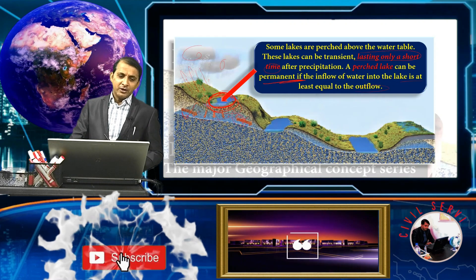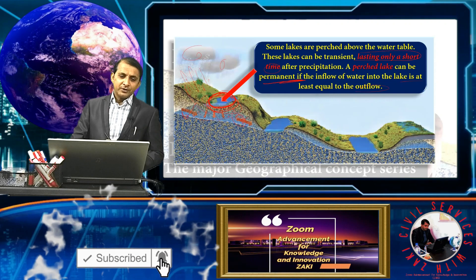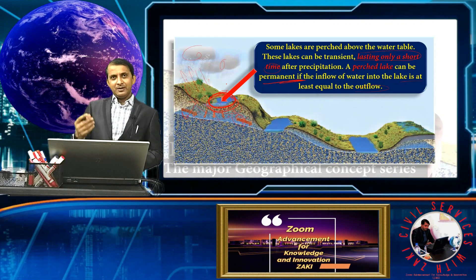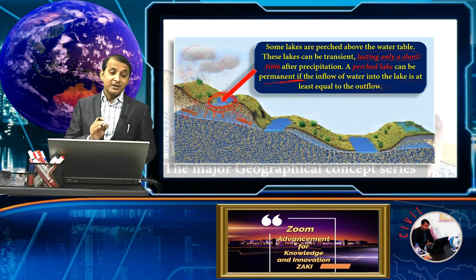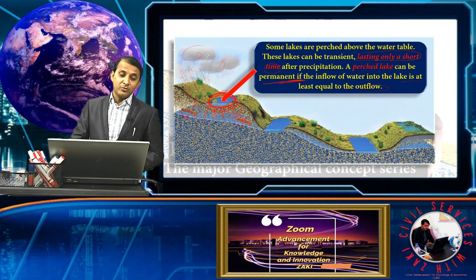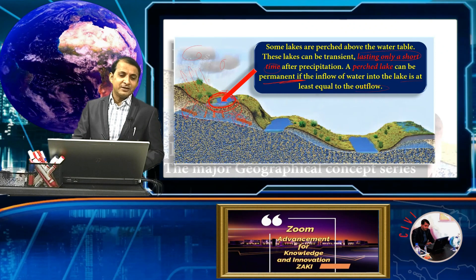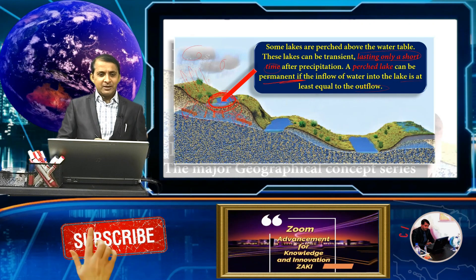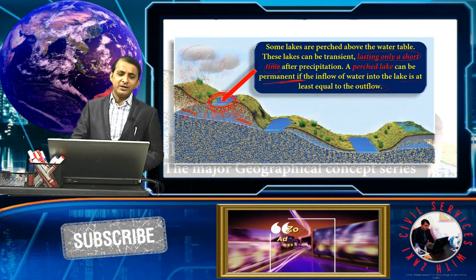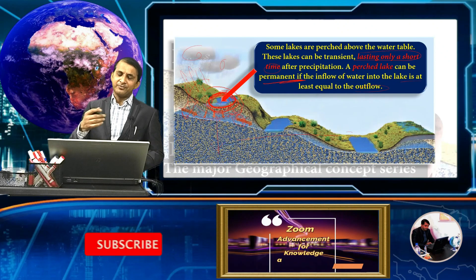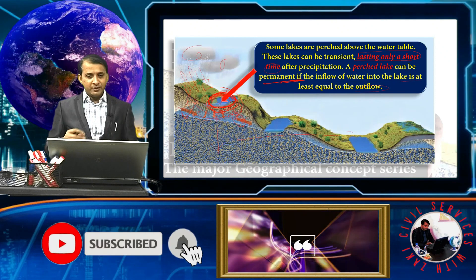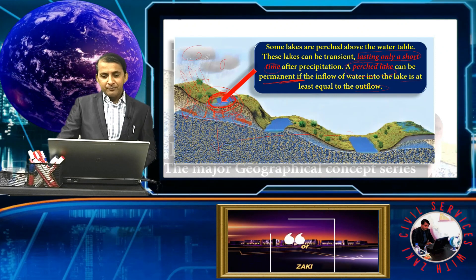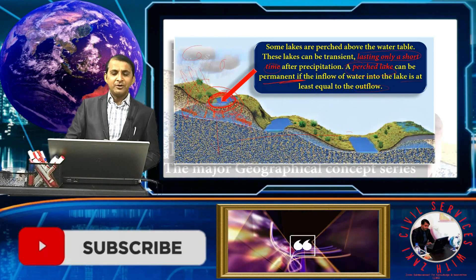If inflow and outflow are equal, the lake may survive. But if inflow is more and outflow is very less, or vice versa, this affects the lake's permanence. Basically these perched lakes are located above valleys and above the ground, which is why they are called perched lakes.